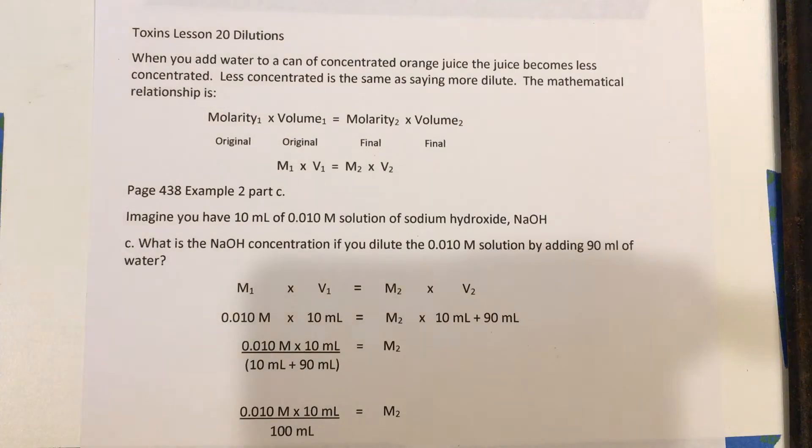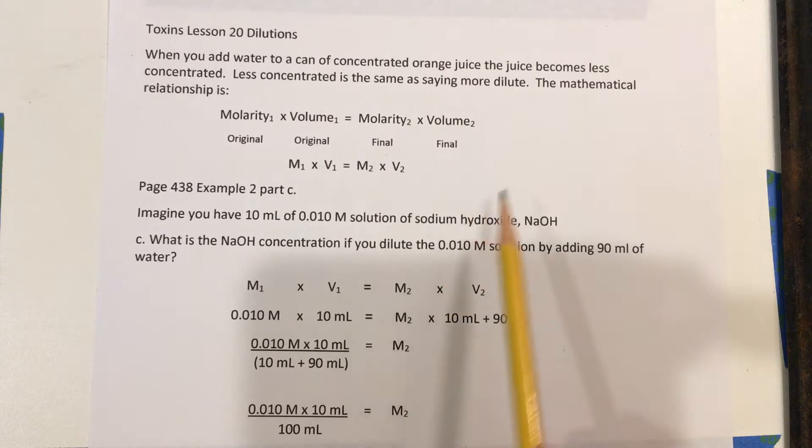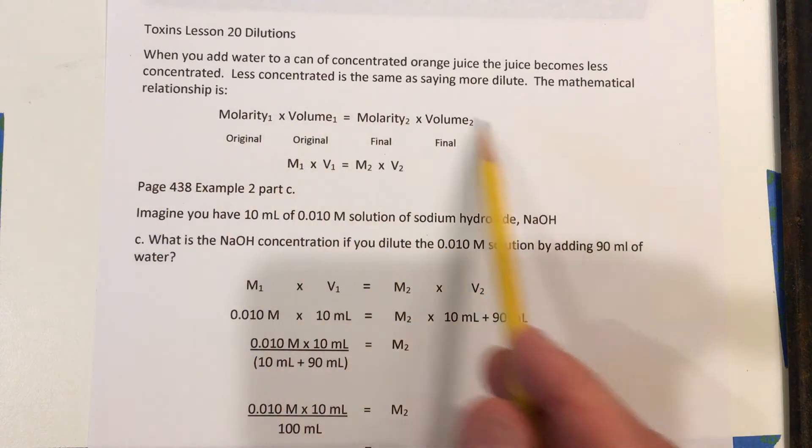Welcome students. Today's video is on Lesson 20 in Toxins called Dilutions. The catchy title is called Watered Down. So what happens when you water stuff down? Well, like a can of orange juice, you buy a can of concentrated orange juice and the orange juice becomes less concentrated when you add water to it. Being less concentrated is the same as saying it becomes more dilute. And the mathematical relationship for that is right here.